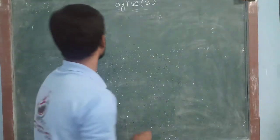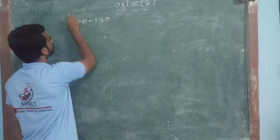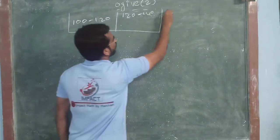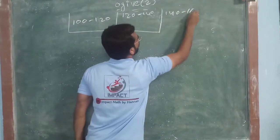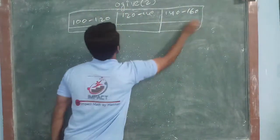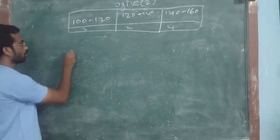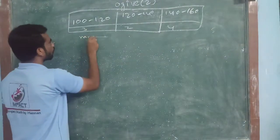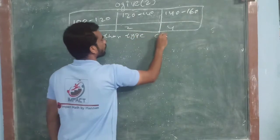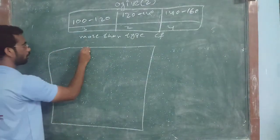Now, we will go for the next one. It is the same 100 to 120, next 120 to 140, 140 to 160. Now, if I... In this one, I am taking 3, 2, 4. Now, it is more than type cumulative frequency. Make the table.